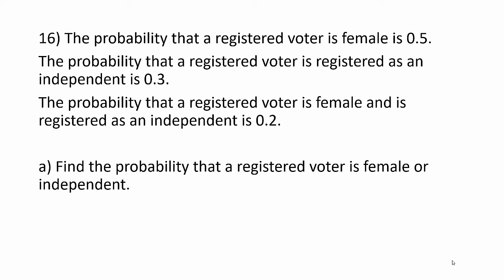In this video, we'll take a look at how to use the addition rule and compute conditional probabilities. The probability that a registered voter is female is 0.5, so I can denote that probability of F equals 0.5.